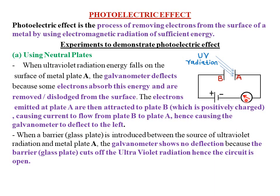When ultraviolet radiation energy falls on the surface of metal plate A, the galvanometer deflects to the left because some electrons absorb this energy and are removed or dislodged from the metal surface of plate A. The electrons emitted at plate A are then attracted to positively charged plate B, causing the current to flow from B to A. Current flows in the opposite direction to that of electrons, so the galvanometer deflects in the direction of the current — to the left.